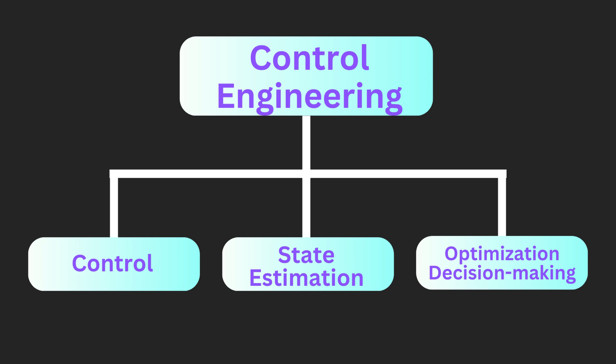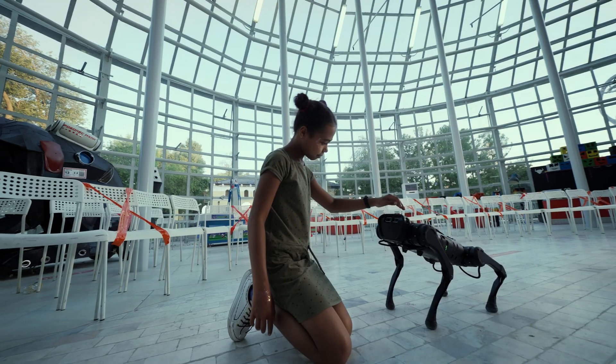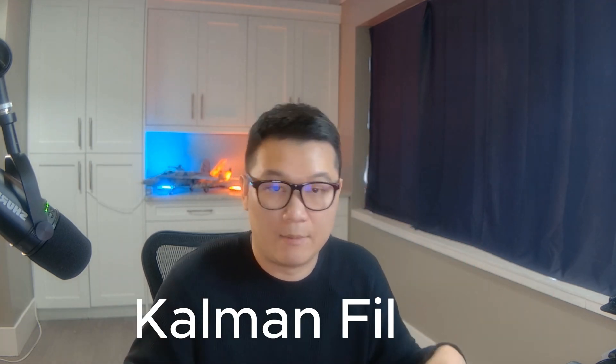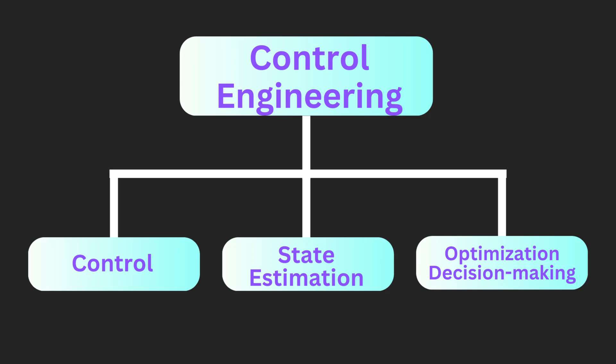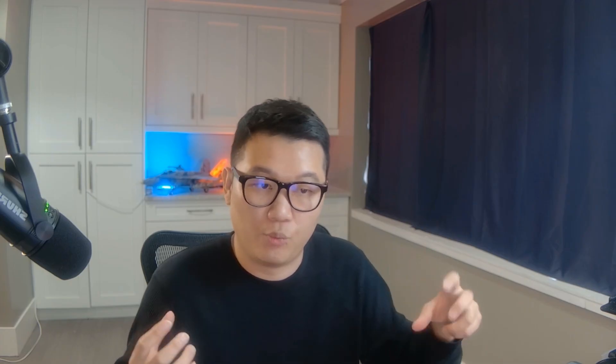Control engineering can be categorized into three main areas. First is literal control — like controlling the RPM of a motor or the joint angle of a robot arm. Second is state estimation or sensing: robots have multiple sensors like LiDAR and inertial sensors, and you extract and fuse that information to estimate current position, velocity, and so on using algorithms like Kalman filters or Bayesian filters. Third is optimization and decision making — finding the optimal path between two points, or, like in my previous project, detecting human gestures with a neural network to decide whether a drone should take off, land, or track an object.